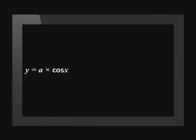If there is a change in the amplitude, the y values of the standard graph will be multiplied by a. We write this as y equals a times cos x.